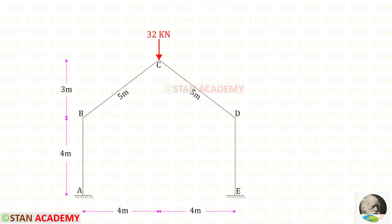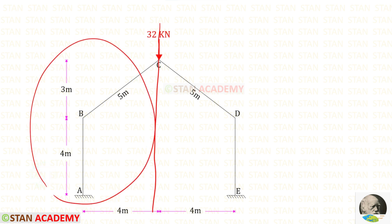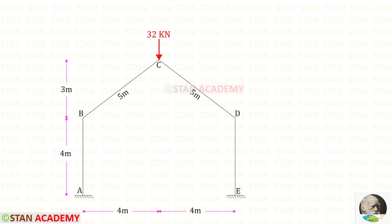Since this frame is symmetrical and the loading is also symmetrical, we can split the frame at the center and take only the left side for analysis. When we take only the left side, we have to take half of this load: 32 divided by 2 gives 16 kilo Newtons.